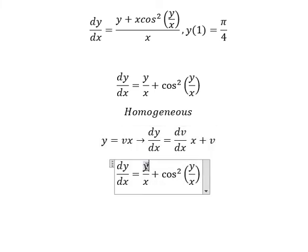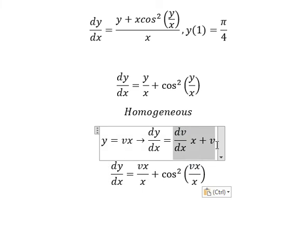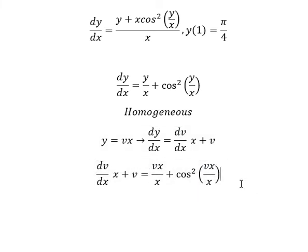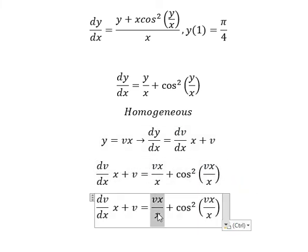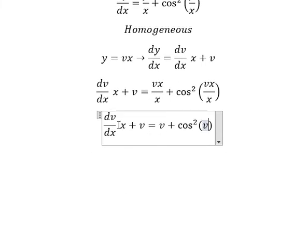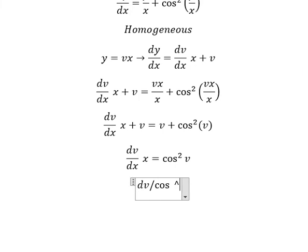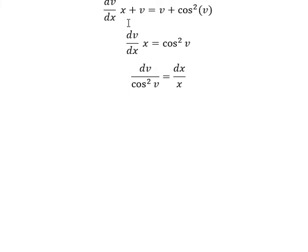So we substitute these expressions into the equation. x divided by x gives us v, and after simplification we get dv/dx times x equals cosine squared v. Now we separate variables, putting dv on the left and dx over x on the right.